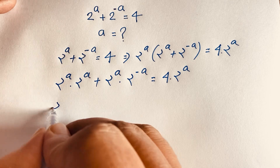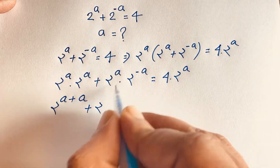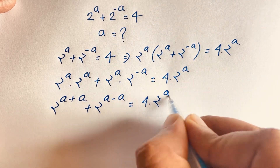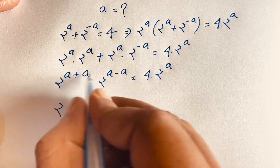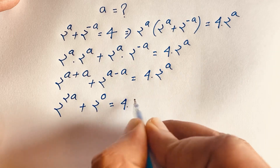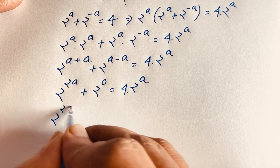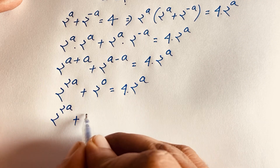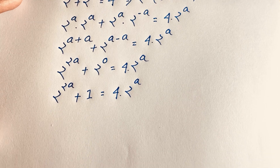According to exponent rules, 2^a times 2^a gives 2 to the power 2a, and 2^a times 2^(−a) gives 2 to the power 0, which equals 1. So we have 2 to the power 2a plus 1 is equal to 4 times 2 to the power a.